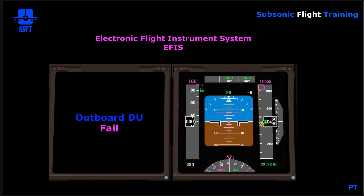In the event of an outboard display unit failure, the display would go blank and the display which normally houses the PFD is protected. With the inboard CRT switch in normal, the PFD will automatically transfer from the outboard display unit to the inboard display unit. It's protected because it has all our flight information — pitch, roll, thrust, attitude, speed, heading, altitude, vertical speed — information that's important to know what the airplane is doing.